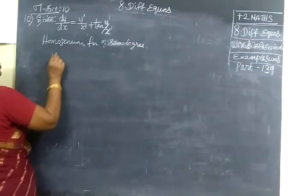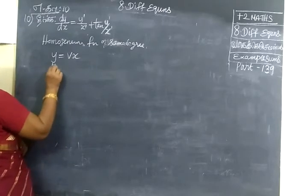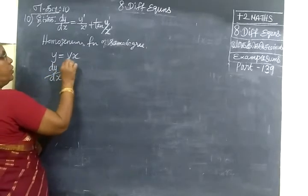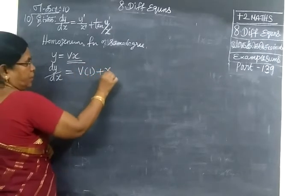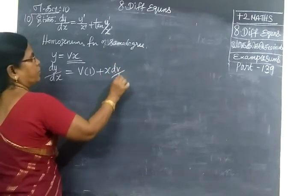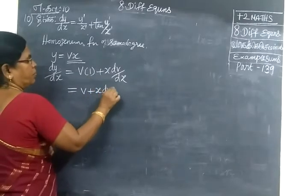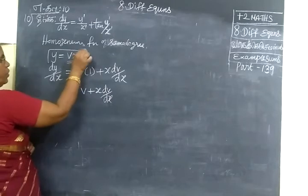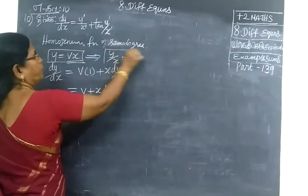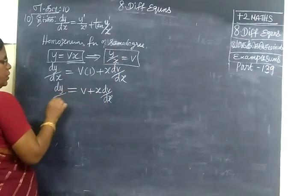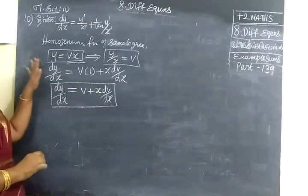we can write, put y equal to vx. Then it is a different shape. dy/dx equal to v times 1st into differentiation of 2nd plus 2nd into differentiation of 1st. So this is the standard form we apply this equation. v plus x into dv/dx. Put y is equal to vx.